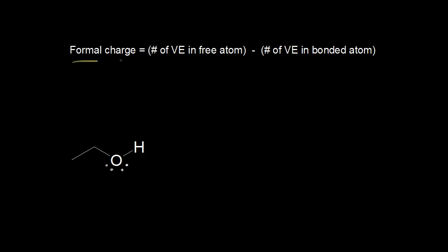We've already seen that formal charge is equal to the number of valence electrons in the free atom minus the number of valence electrons in the bonded atom. Another way of saying that is the formal charge is equal to the number of valence electrons the atom is supposed to have minus the number of valence electrons the atom actually has in the drawing.